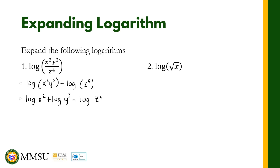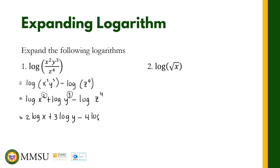Just copy the second term as it is: logarithm of z raised to four. Finally, the power rule states that when there is an exponent, we can make it the coefficient. So for logarithm of x squared, the exponent 2 becomes the coefficient: 2 logarithm of x. For logarithm of y cubed, the exponent 3 becomes the coefficient: 3 logarithm of y. And for logarithm of z raised to 4, it becomes minus 4 logarithm of z. That is the expanded form of the given logarithmic expression.